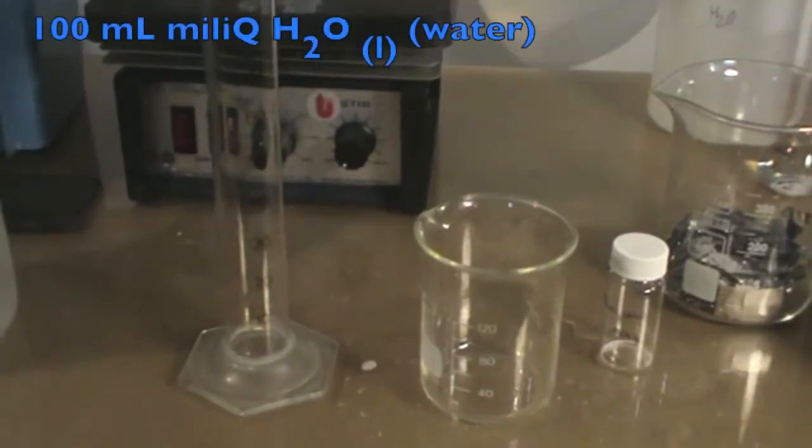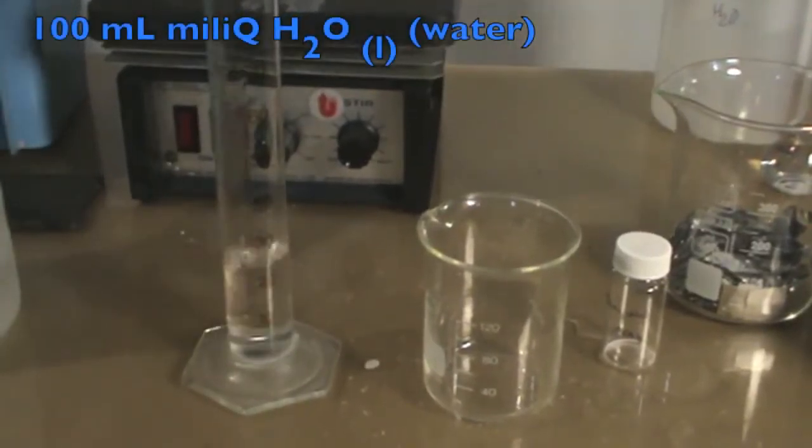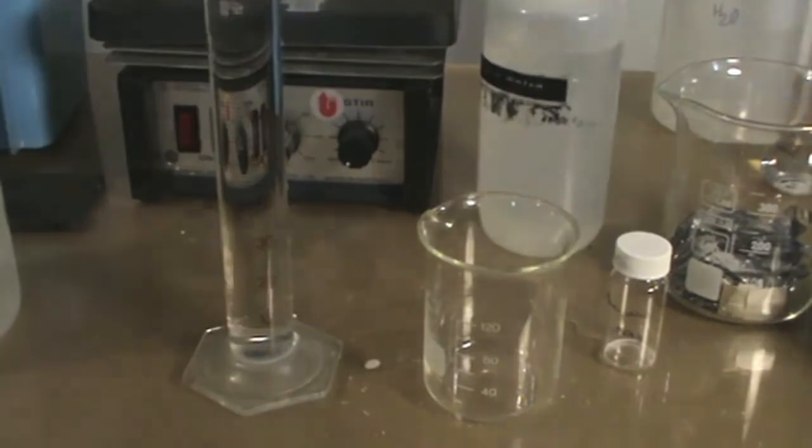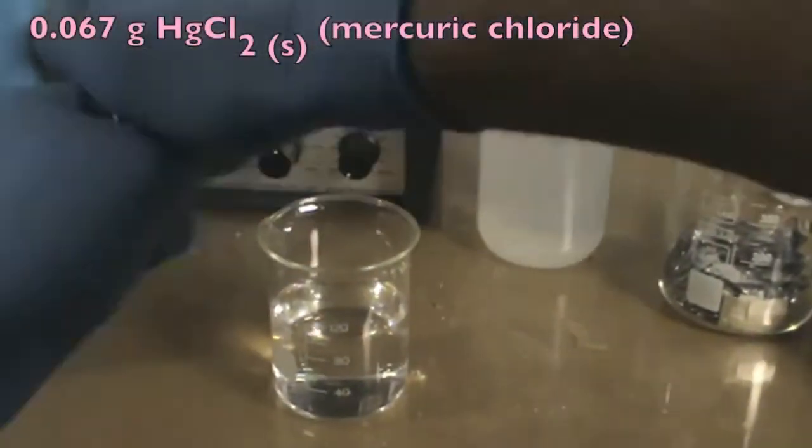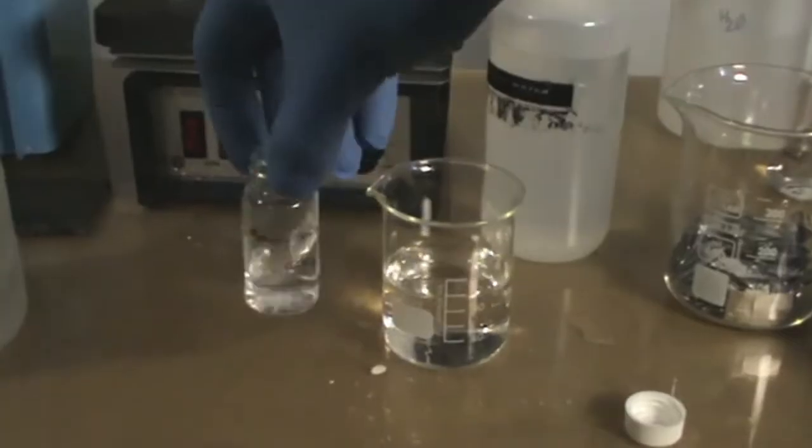For the next part, measure out 100 ml of MQ water and add it into a suitable beaker. To this, add 0.067 grams of mercury chloride and make sure all of it is dissolved.